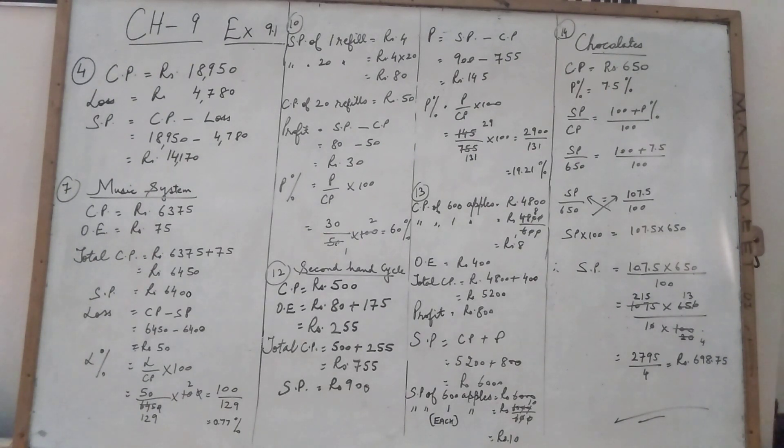See the 12th one. Amit bought a second hand cycle for Rs. 500 and he spent Rs. 80 for repairing and Rs. 175 for repainting. This repairing and repainting both are overhead expenses. That will be added in cost price. Then he sold it to John for Rs. 900. How much did he gain or lose percent?